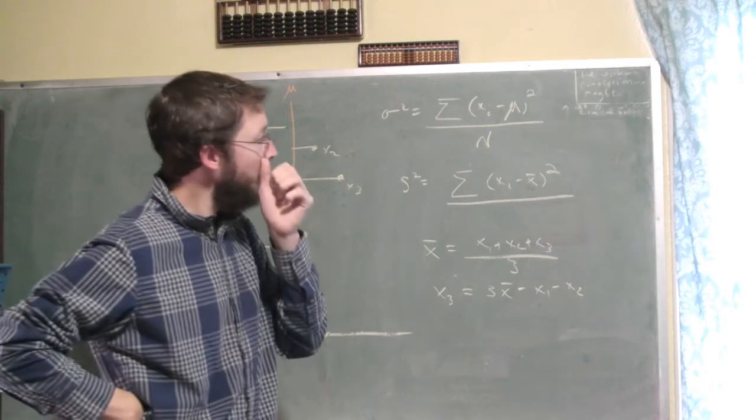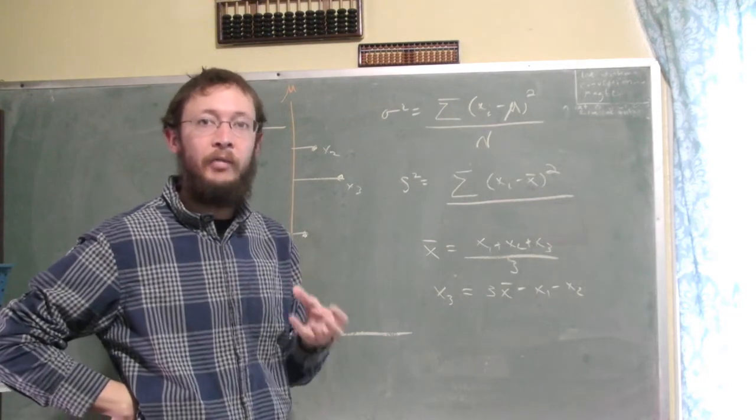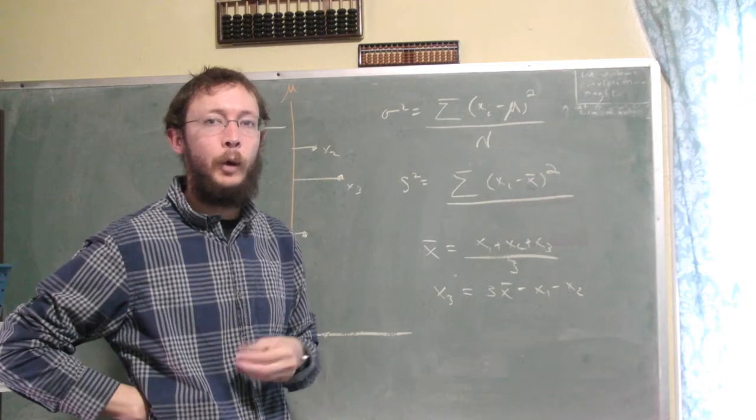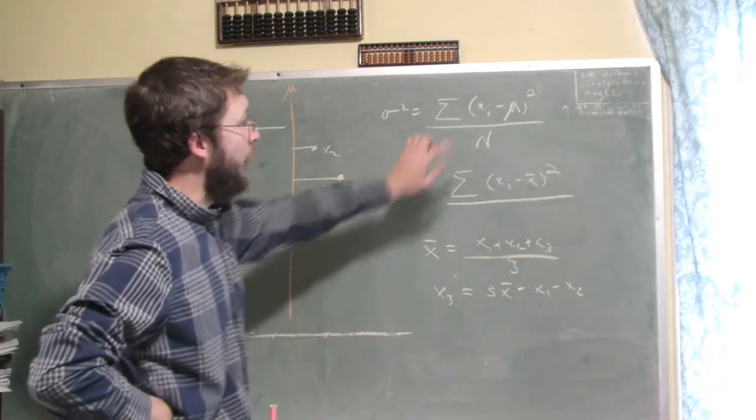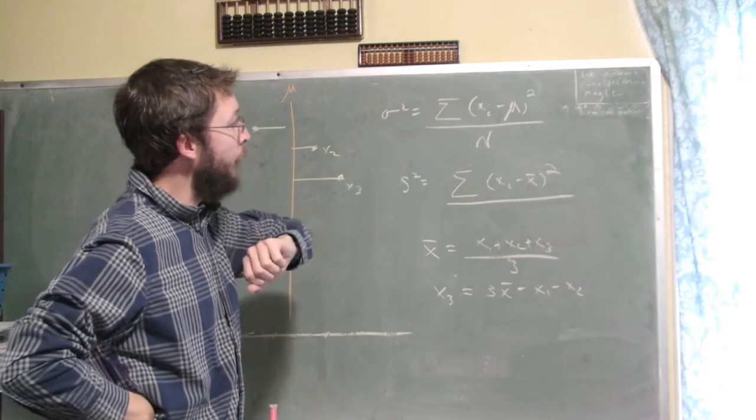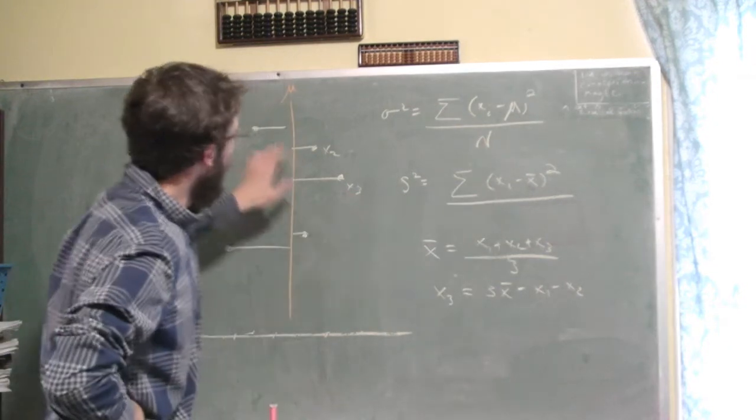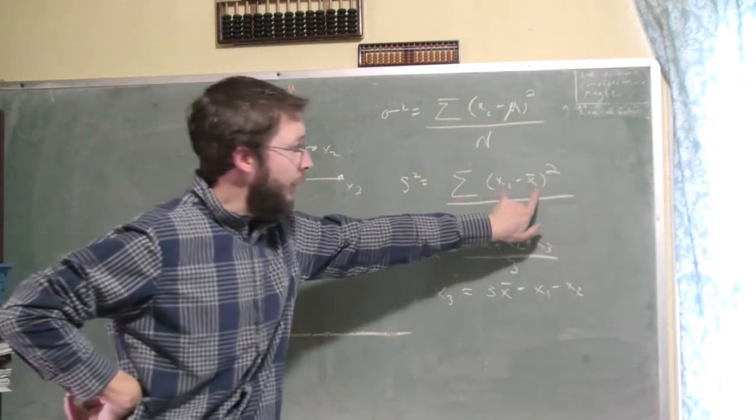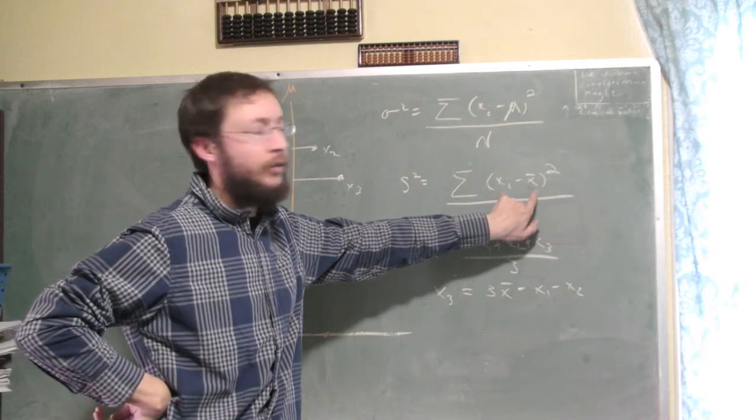So the same principle applies, that the variance is the average squared distance from the mean, where we're averaging relative to the number of random variables that we have. And looking at this formula, we might say, okay, we have these three data points, let's take the signed distance, just that difference, square it.